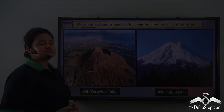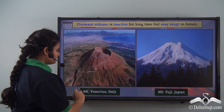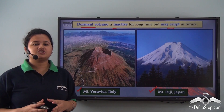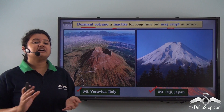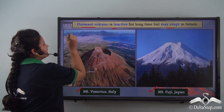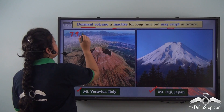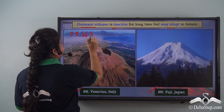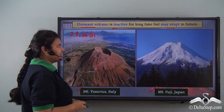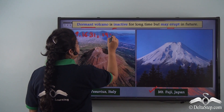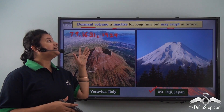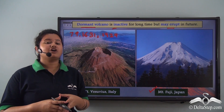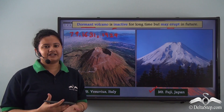An example of a dormant volcano is Mount Vesuvius of Italy. Its first eruption occurred in AD 79, then after a long pause it erupted again in 1631, and most recently in 1929. This time gap shows that these volcanoes remain inactive for long and may erupt suddenly one day.